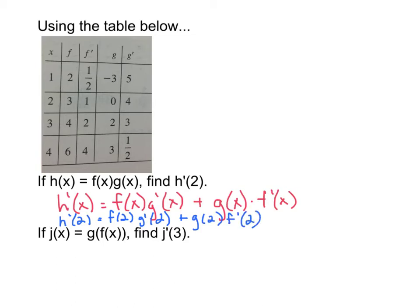I'm just going to basically go through and write down what those are. f of 2 is 3, so 3 times g prime of 2 is 4. We've got f of 2 times g prime of 2, plus g of 2, which is 0, and f prime of 2, which is 1. So we've got 12 plus 0. Final answer is 12.